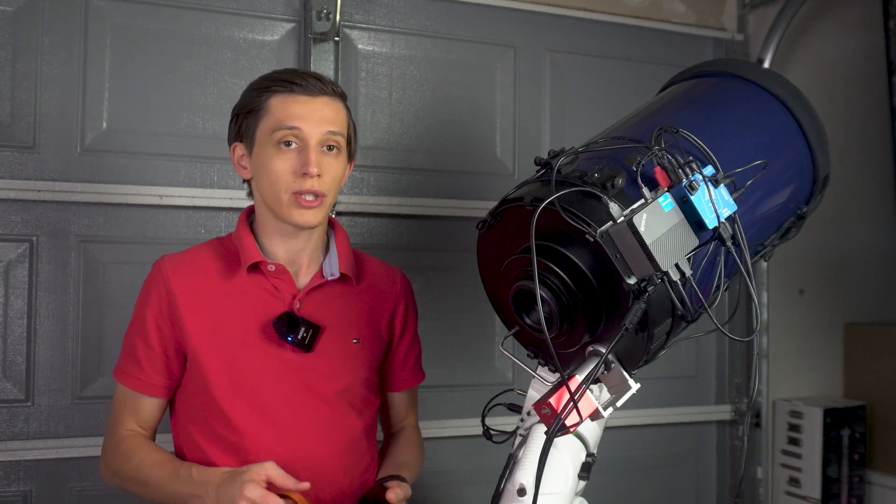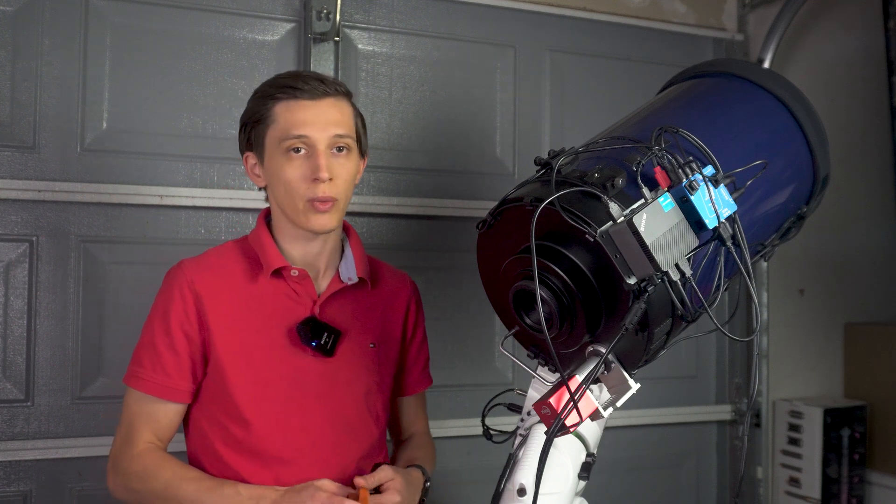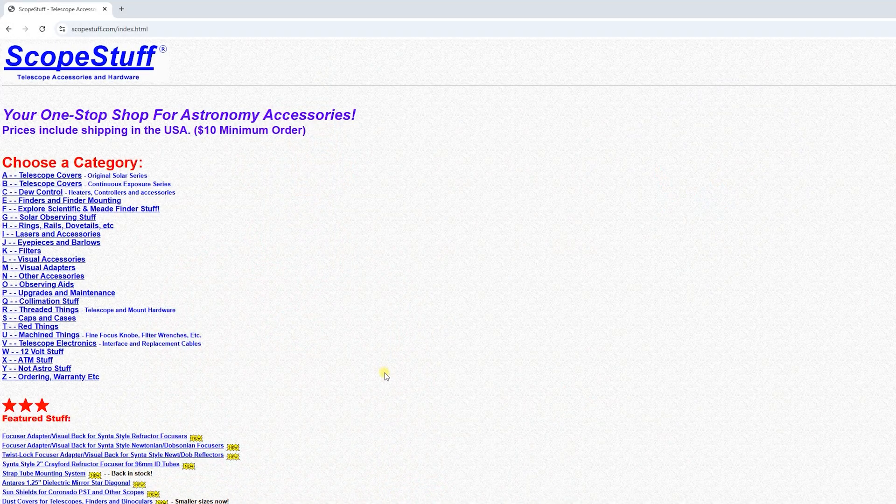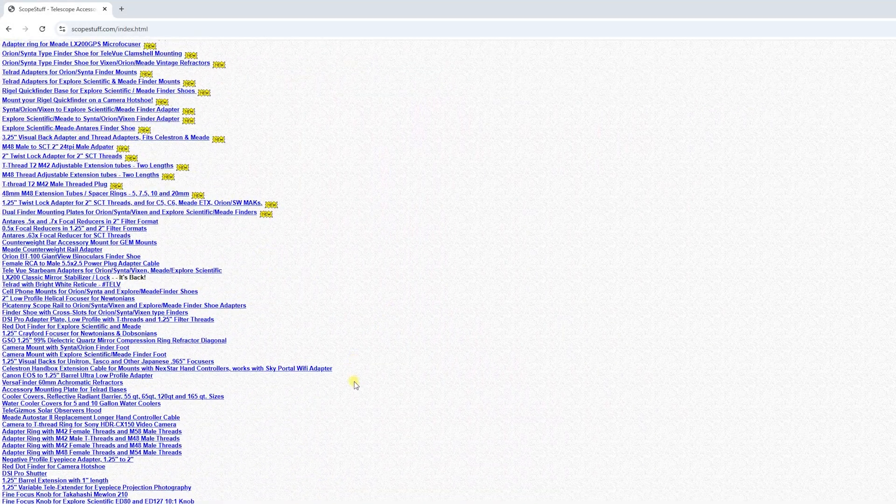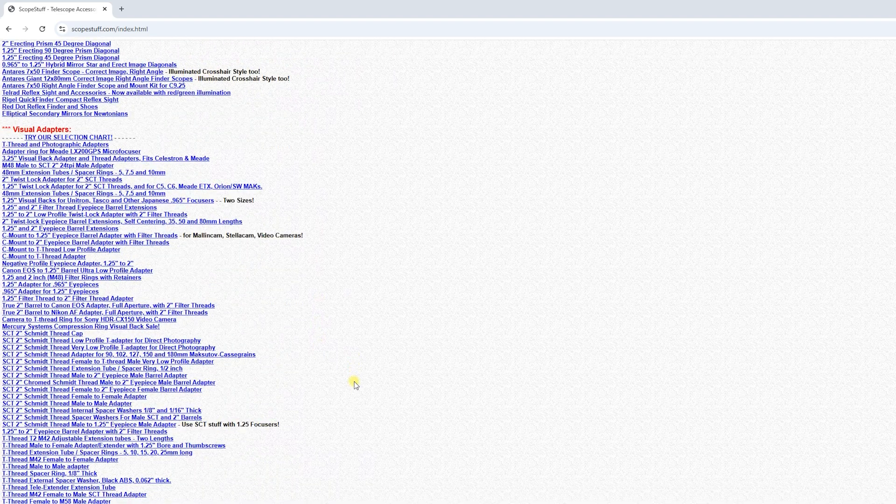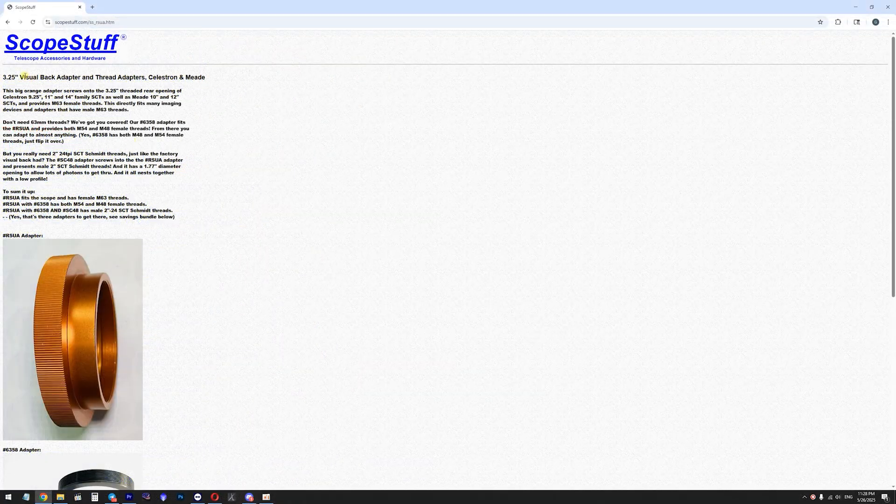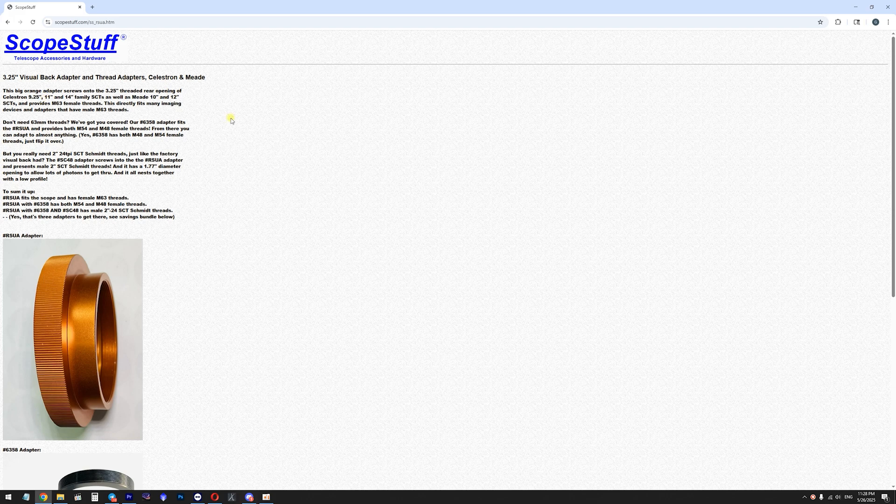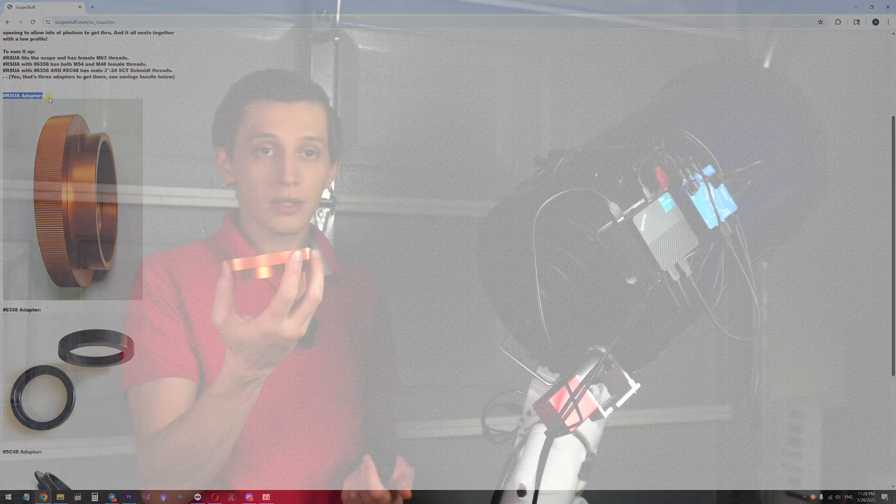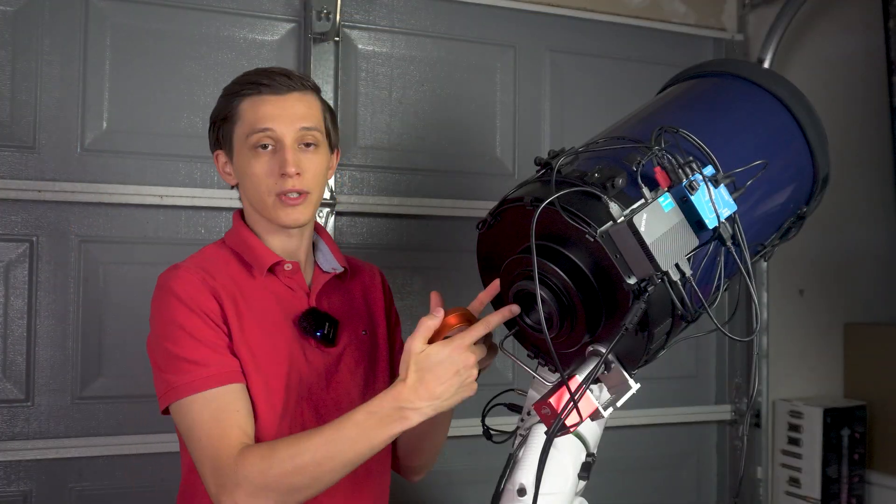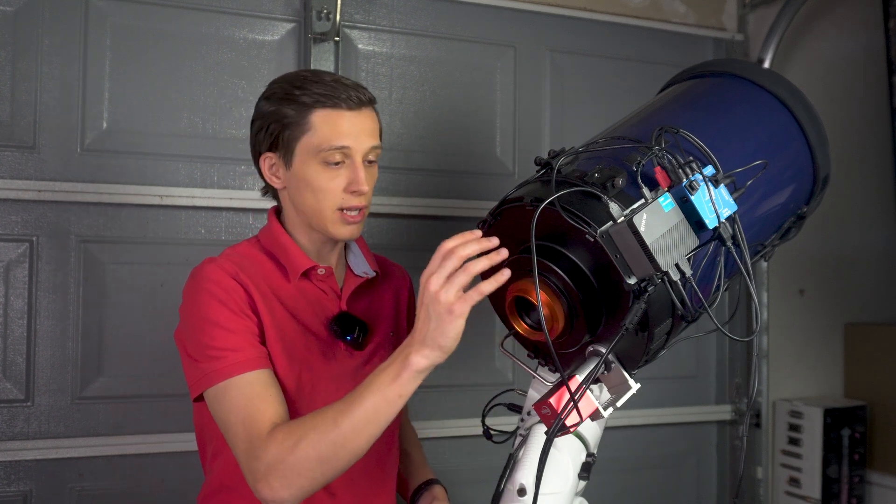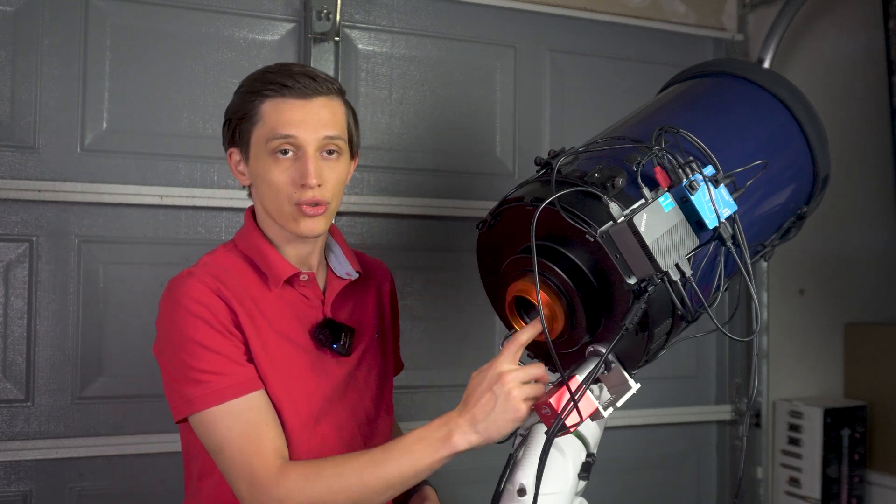So I was looking for an alternative mounting solution, and while searching I found a company called Scope Stuff. They're located in the US and make different adapters, rings, and mounting solutions for imaging systems. Basically they sell this adapter that has three and a quarter inch female thread on one side and M63 female thread on the other side. I ordered this adapter and right now it's installed on the Meade telescope instead of the original adapter. After installing this adapter you have M63 female thread.